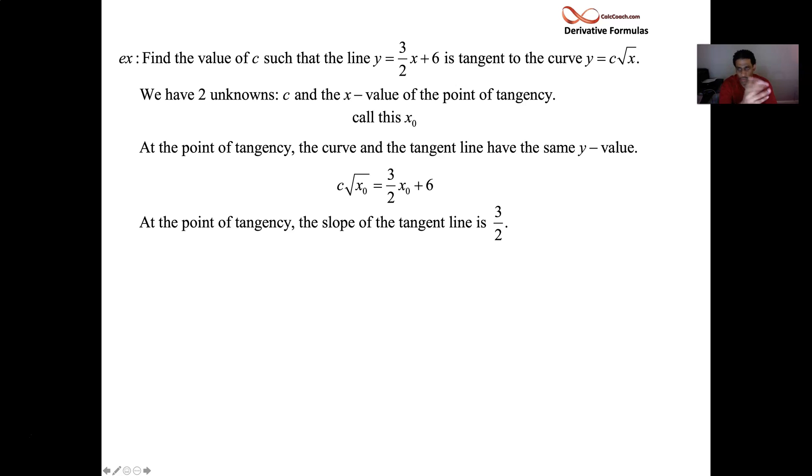And so we can set these equal to each other. It doesn't tell us directly what one of them is, but it's a relationship between the two unknowns: the c and the x₀. At the point of tangency at x₀, the line should equal the function: (3/2)x₀ + 6 = c√x₀. At the same time, the slope of the tangent line should be 3/2. So this derivative should be 3/2 at x₀ when you plug in x₀.